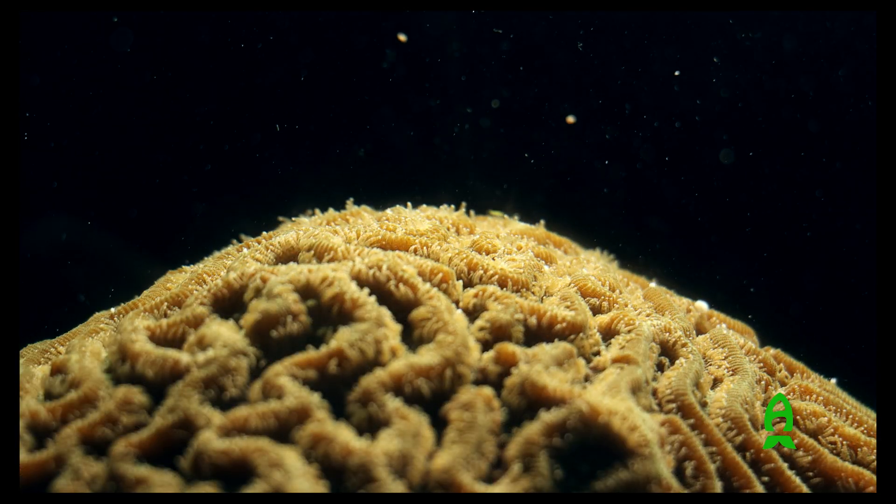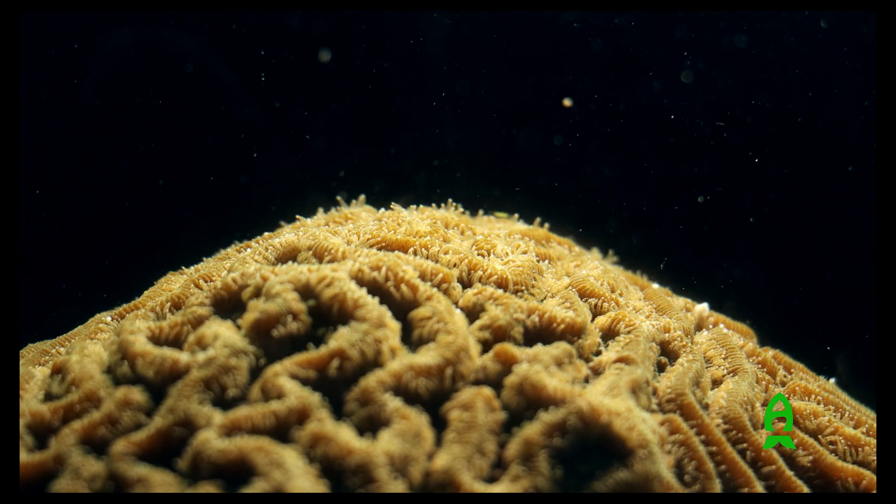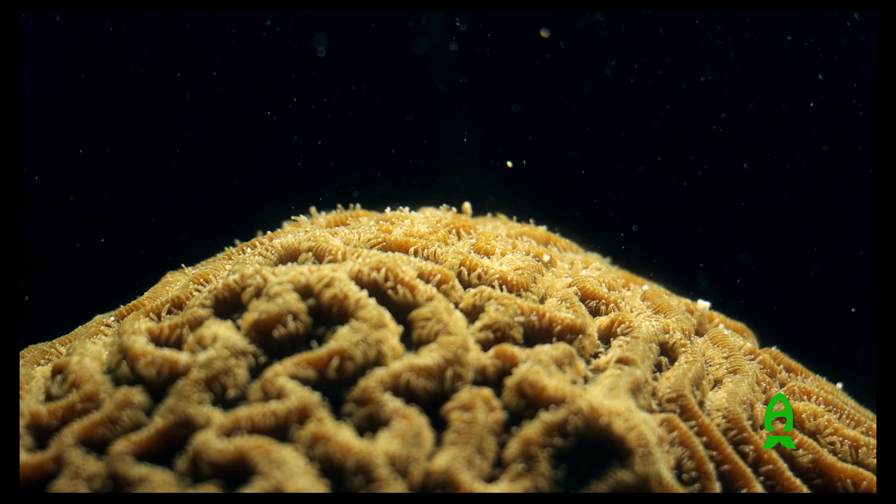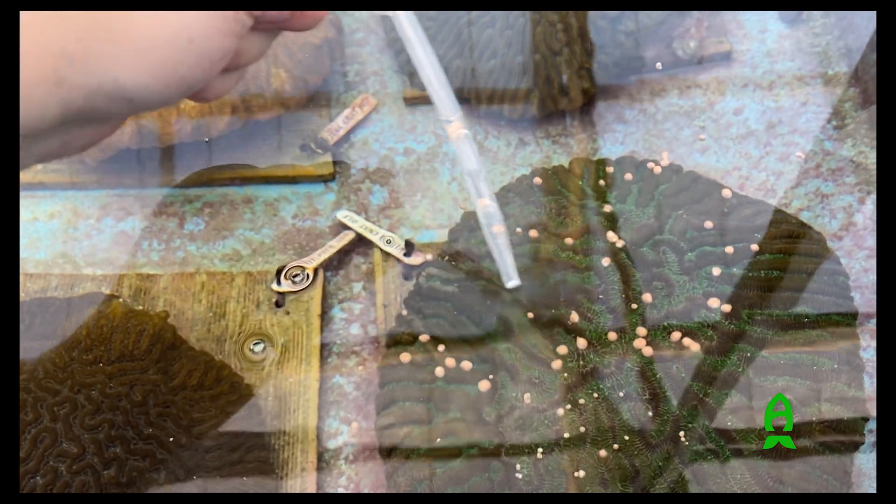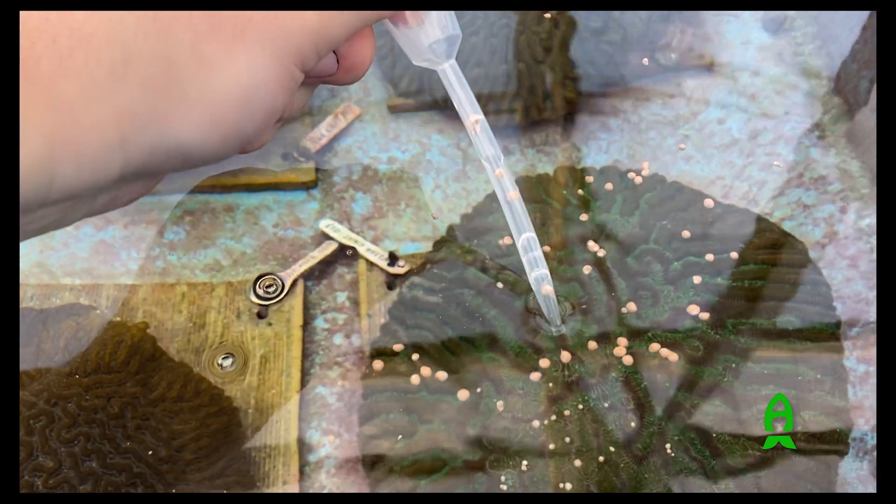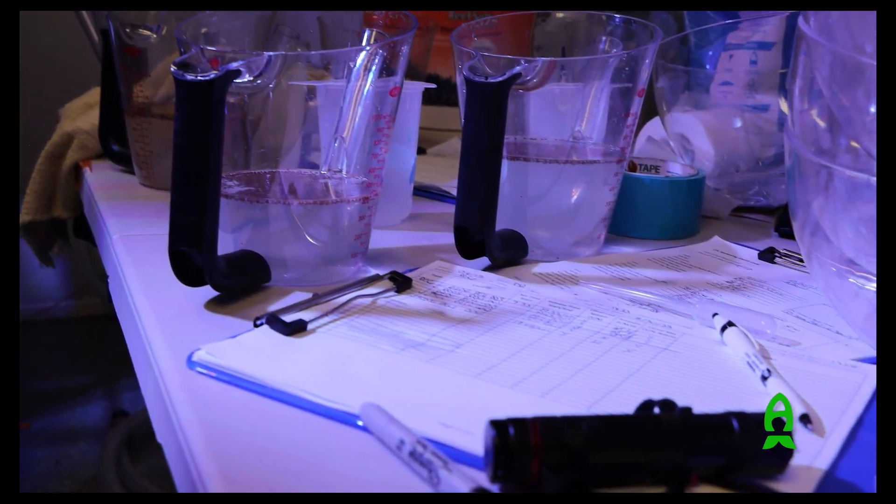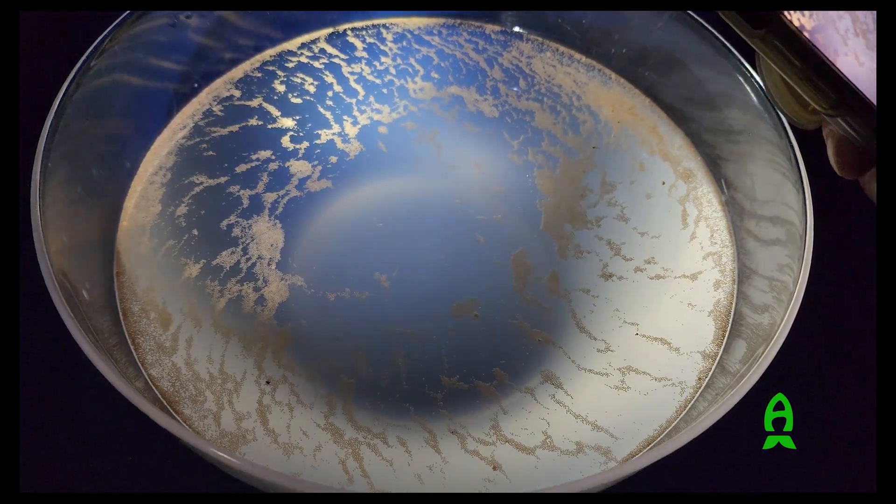And when these corals spawn, they bundle the eggs and sperm together into a buoyant bundle that comes out of the mouth of the polyp and floats up to the surface of the water. And then we will come in and scoop those bundles off of the surface of the water and put them into either a gravy separator or a clear bowl or sometimes even a cooler when there's a lot of spawn.